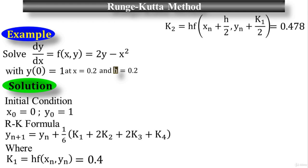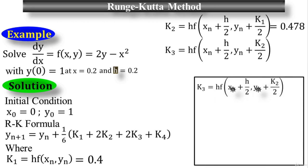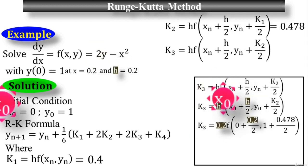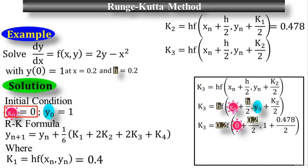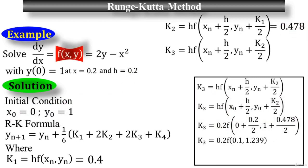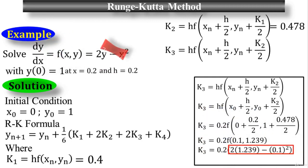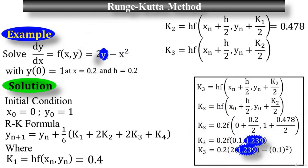Now for the third stage, k₃. The formula is h times f(x_n + h/2, y_n + k₂/2). Substituting where h = 0.2, x₀ = 0, y₀ = 1, and k₂ = 0.478: this simplifies to f(0.1, 1.239), which equals 2y minus x squared where y = 1.239 and x = 0.1. The final value for k₃ is 0.4936, the approximate value for the third stage.